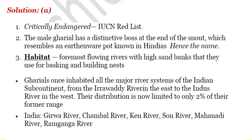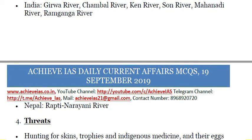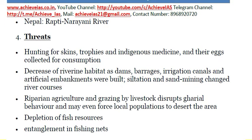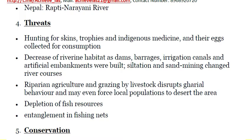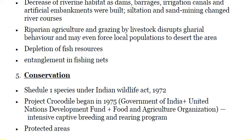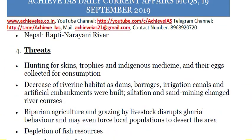Gharials once inhabited all major river systems spanning from the Indus River in the west to the Irrawaddy River in the east, but their distribution is now limited to only two percent of their former range. In India they are found in the Girwa, Chambal, Ken, Son, Mahanadi, and Ramganga rivers, and in Nepal in the Rapti-Narayani river. Threats include hunting for skins, trophies, and indigenous medicines, egg collection for consumption, decrease in riverine habitat due to dams, barrages, irrigation canals, artificial embankments, siltation, and sand mining. Riparian agriculture and livestock grazing disrupts Gharial behavior, and there is also depletion of fish resources and entanglement in fishing nets.